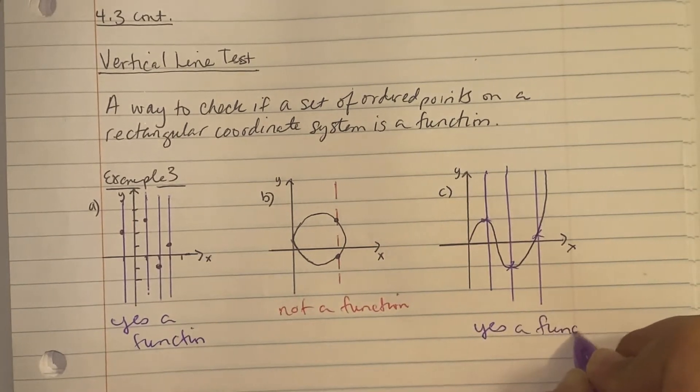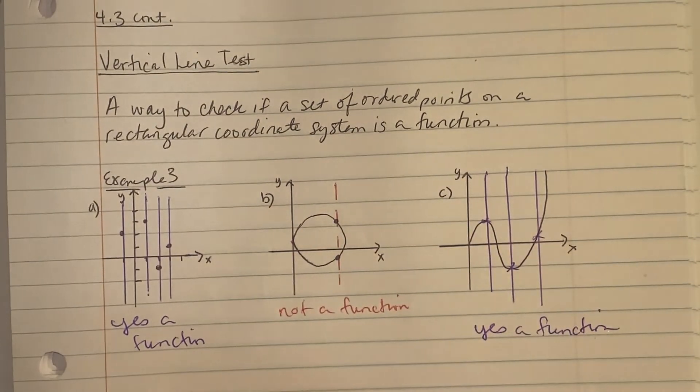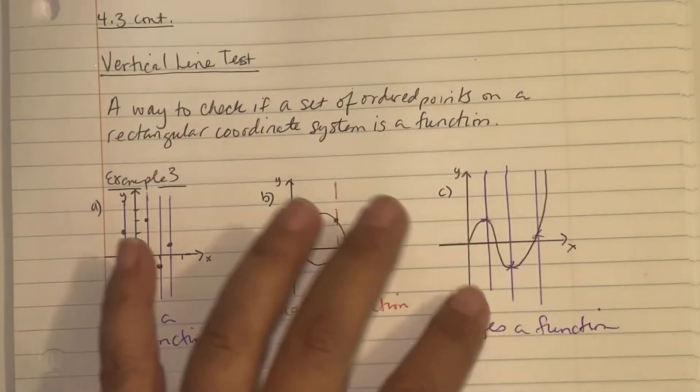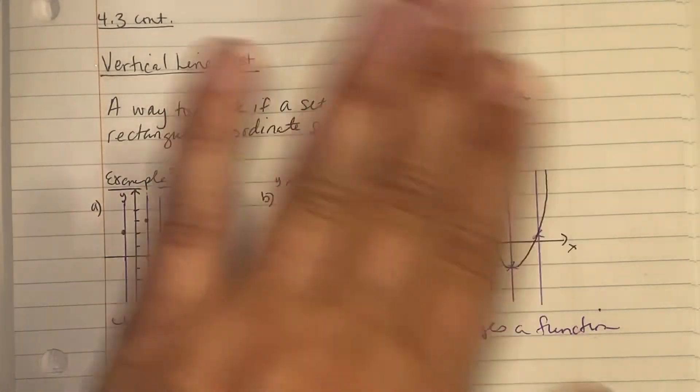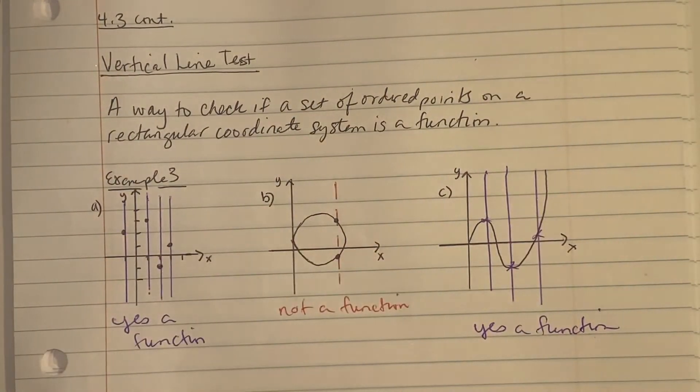The vertical line test will verify that you can have any type of domain and ordered pair, but the vertical line test will prove if it's a function or not.